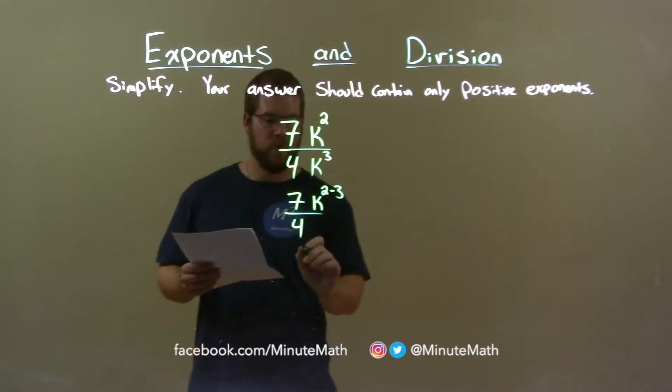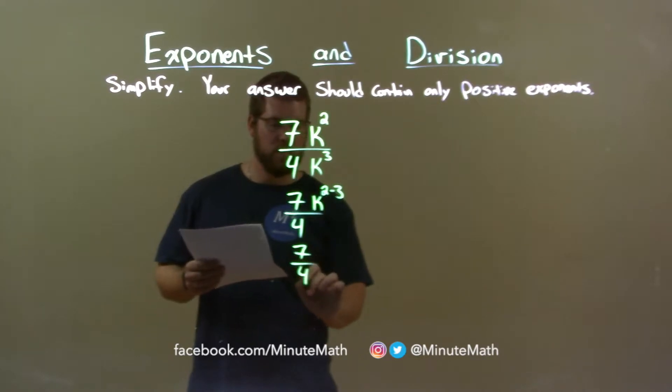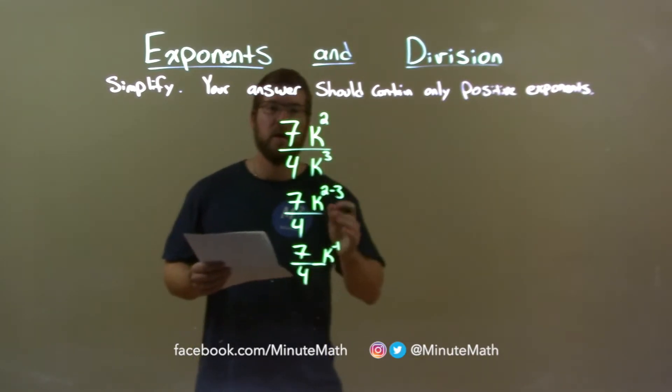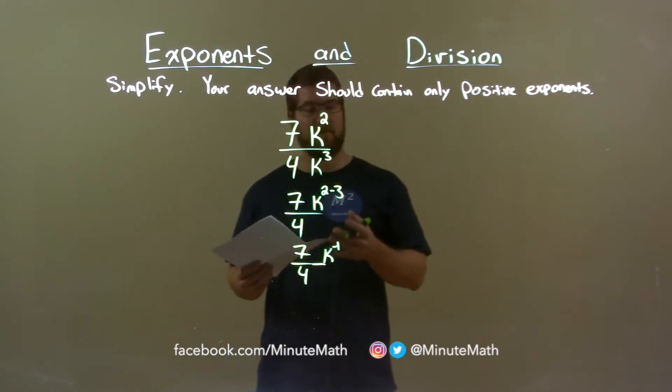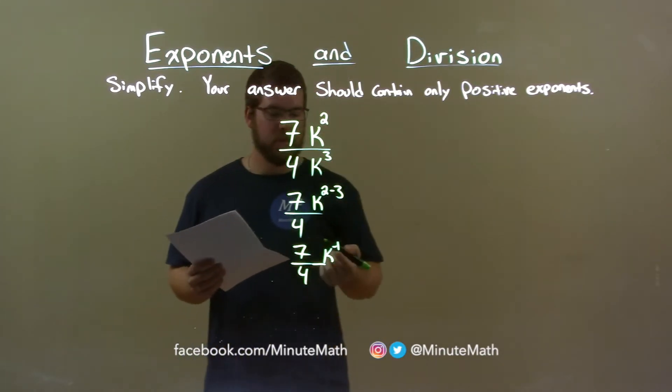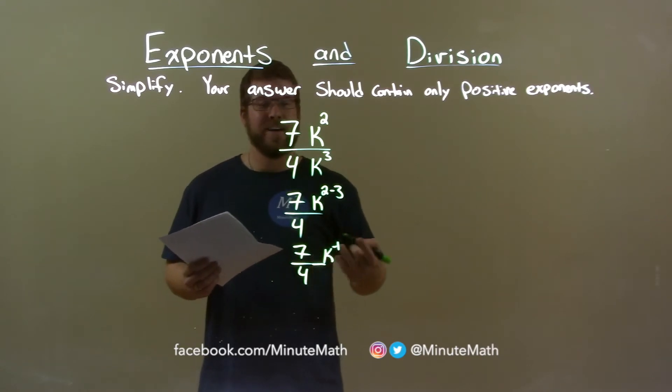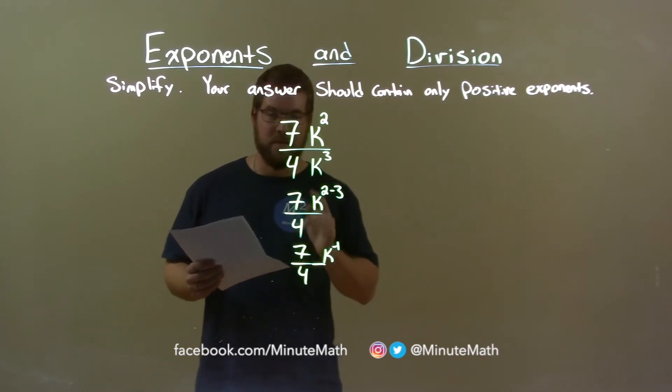2 minus 3 is negative 1, so we have 7 over 4, and we have k to the negative 1 there. Now, they told us we couldn't have any exponents that was negative, and so we needed a positive exponent. So, k to the negative 1 power is the same thing as k to the positive 1 power where the variable's in the denominator.